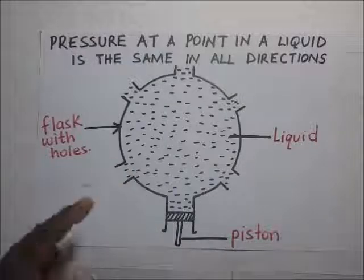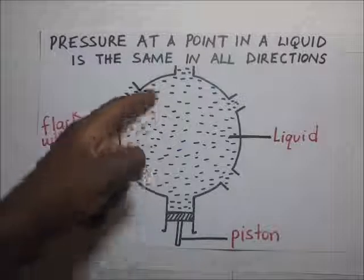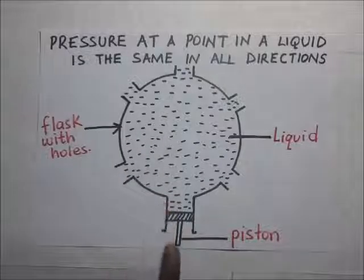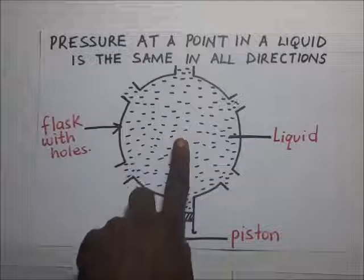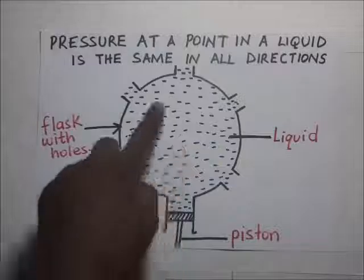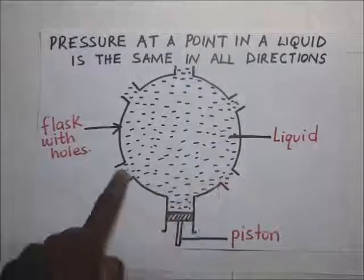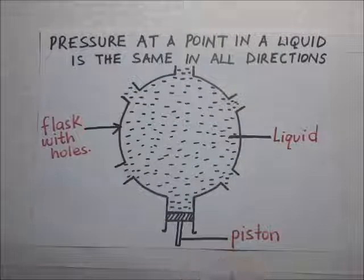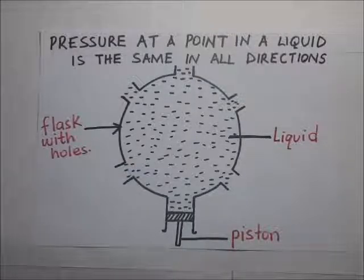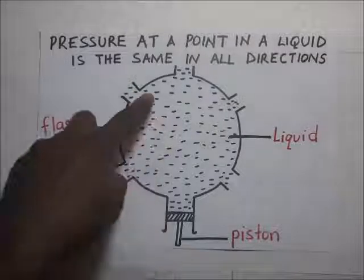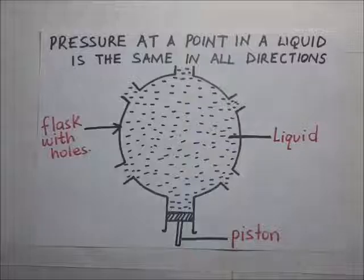What we do is push this piston inside. When we push the piston, pressure is going to be applied onto the walls of this flask. As a result, the pressure exerted into this liquid is going to force the liquid at these holes to flush out. In other words, when the piston is pushed, it puts pressure on the liquid and that will cause the water to shoot out of these holes in all directions.